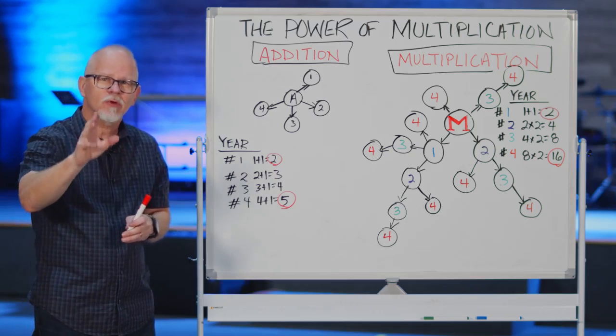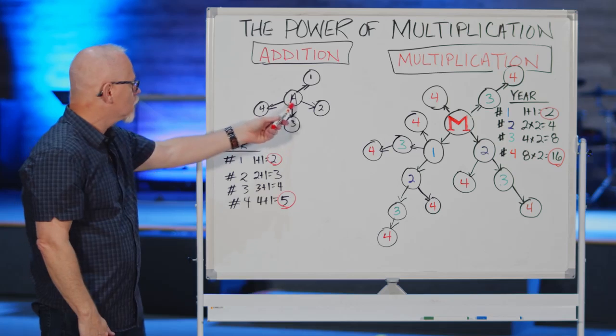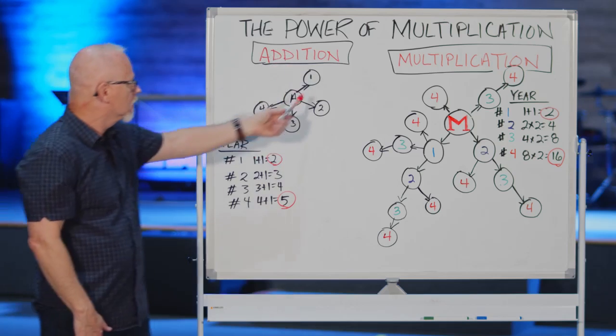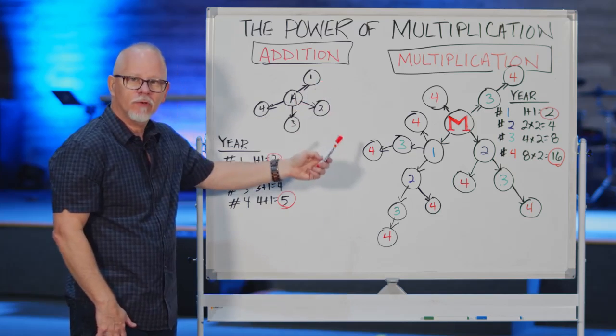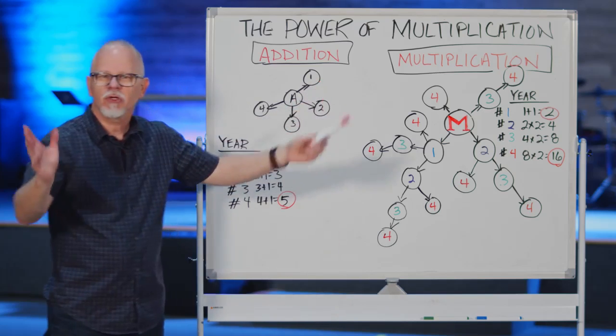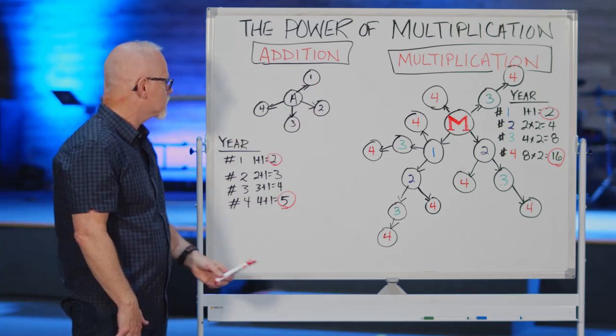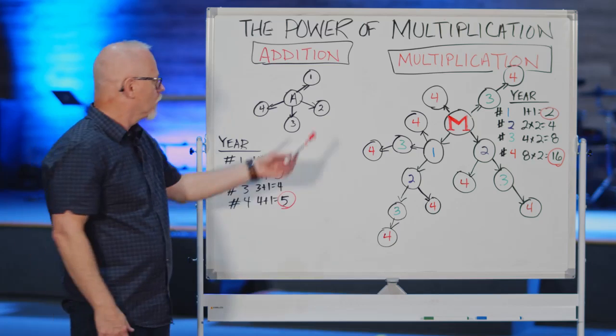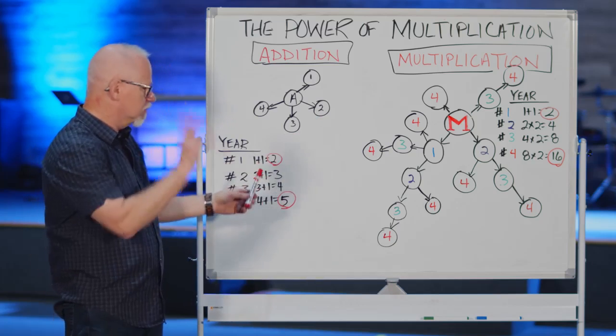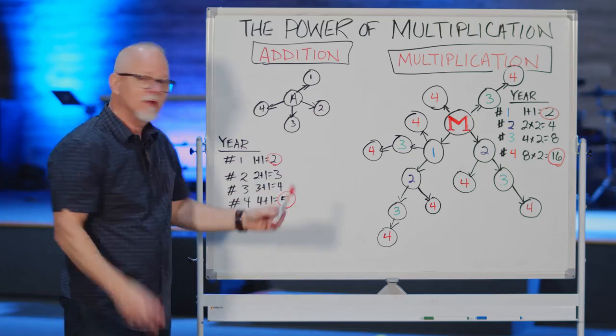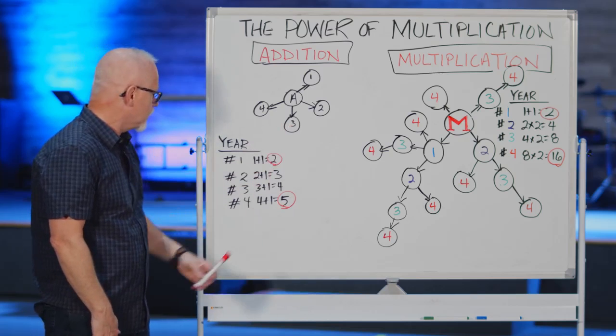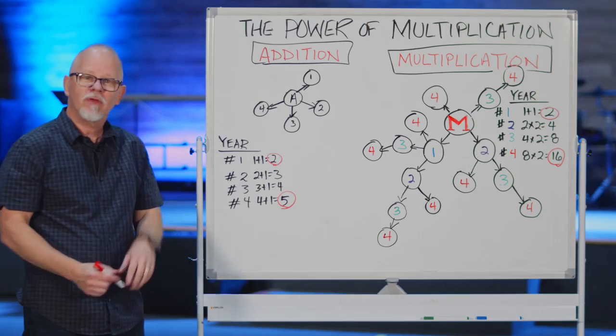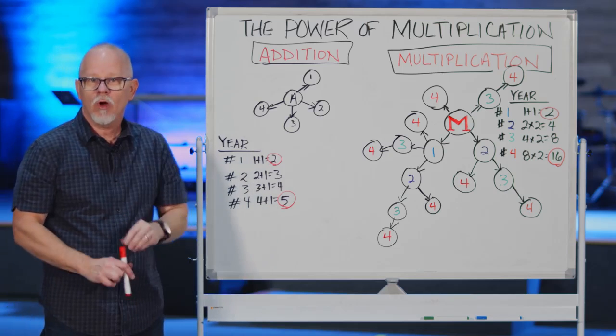This is the way most of us do ministry. There's one person and they're adding. We use the principle of addition. We add a new convert, we add a new Christian. Let's say we're doing it every year. We add one the first year. So that's us plus that one, that equals two. We add one the second year. That's the first two plus the new one, that's three. We add one the third year, that would be four. We add another one, that would be five if we were adding one a year.